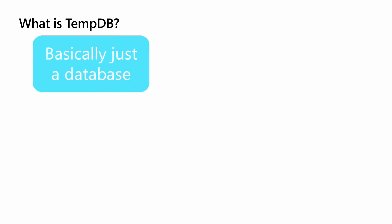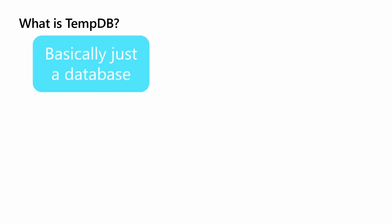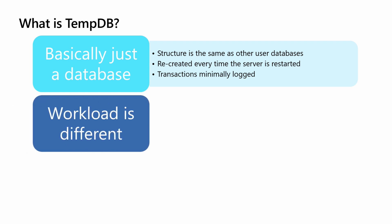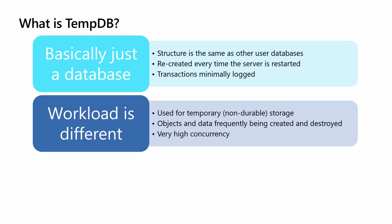Let's start with a little bit of background on TempDB. What is it? It's essentially just a database like any of your other user databases. The difference with TempDB is it's used for temporary storage, so it's not durable. We recreate it every time the server is started, and we're able to do things like minimally logged transactions because we don't have to worry about recovery. The workload in TempDB, however, is different than most of your user databases. Because it's used for temporary storage, objects and data are frequently being created and destroyed, and there's very high concurrency. There's only one TempDB database on your server, so even if you have multiple databases and many different applications connecting to the server, they're all going to be connecting to the same TempDB.